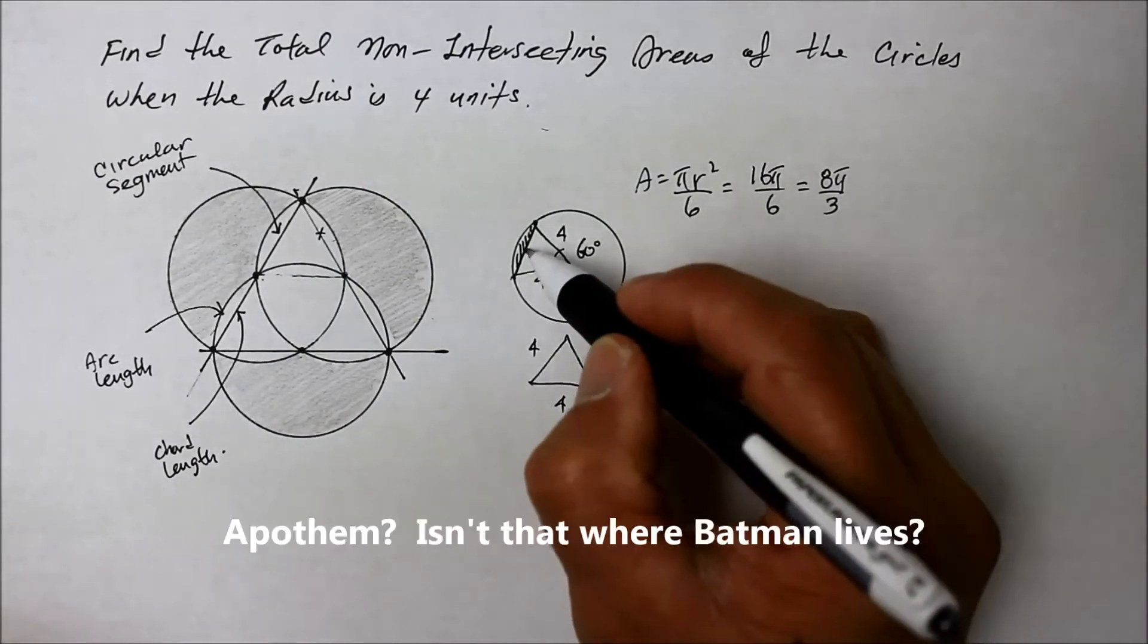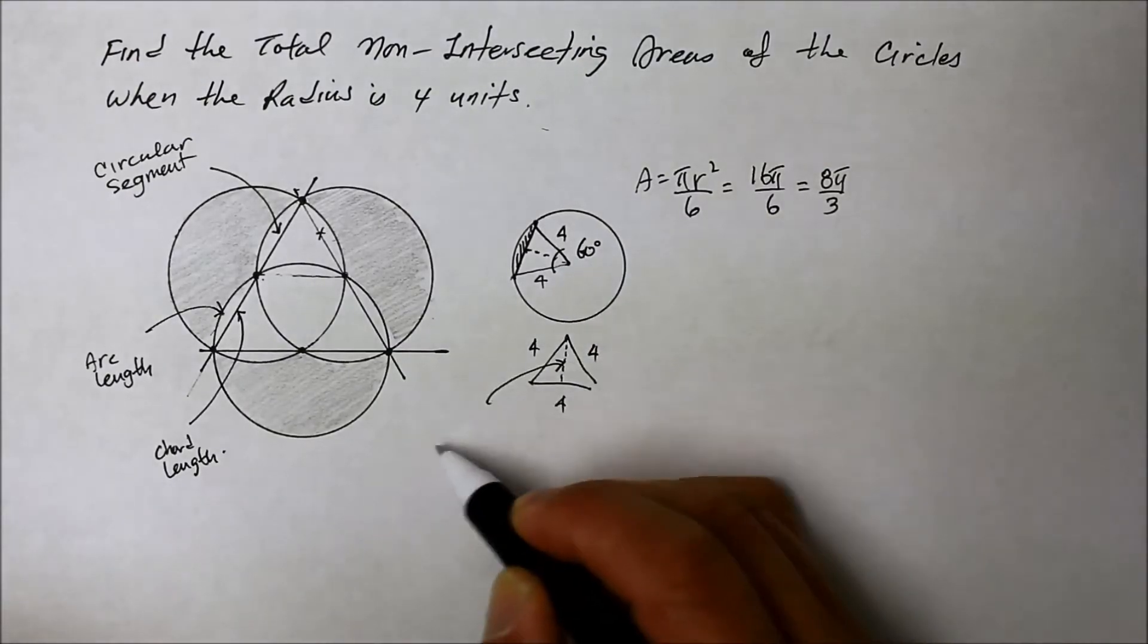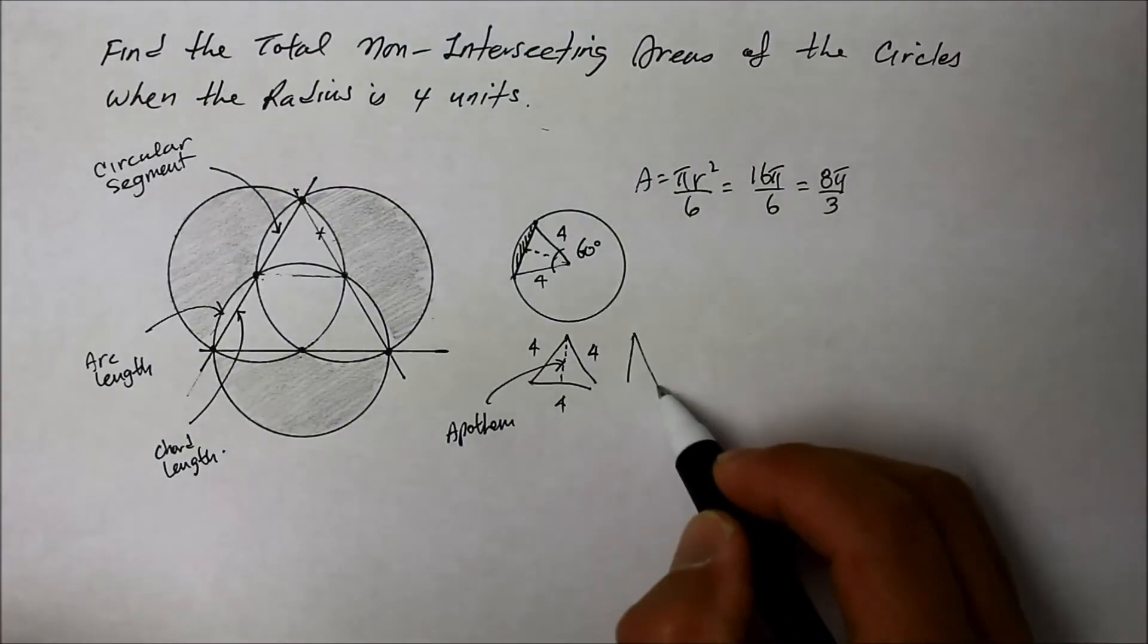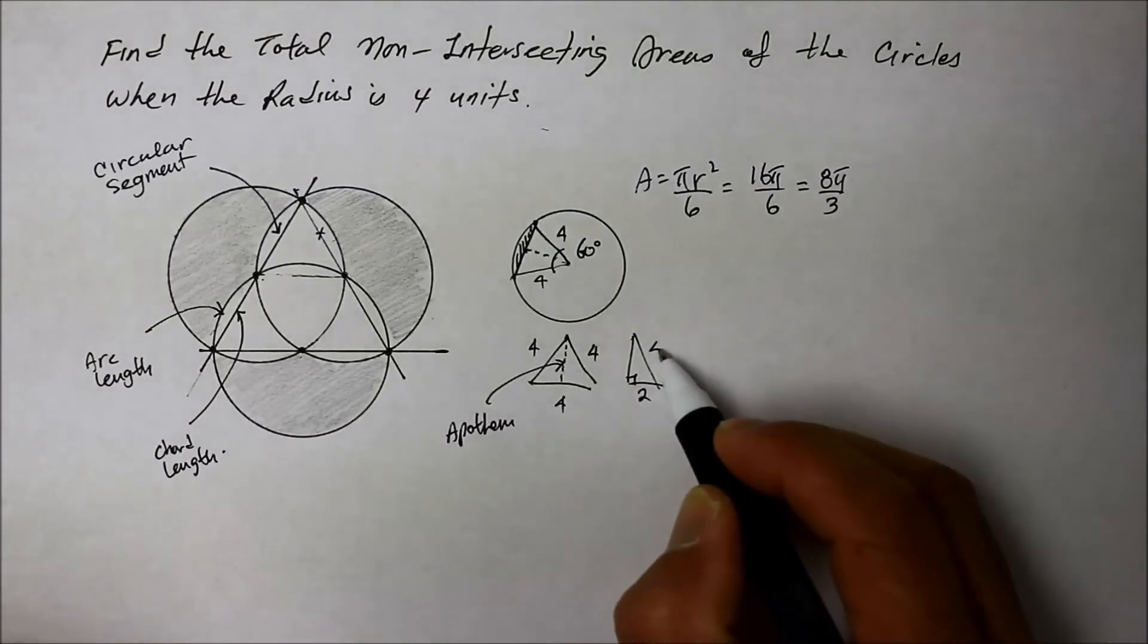Well, the apothem, which is also the height. This is the apothem, which is the height. Let's take that divide in half, so we know that that's half the length. And that's a 4.